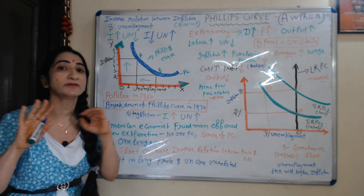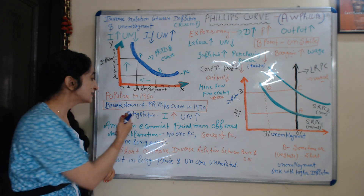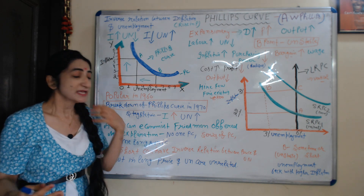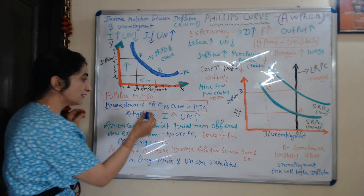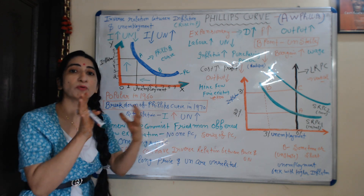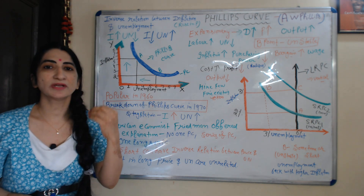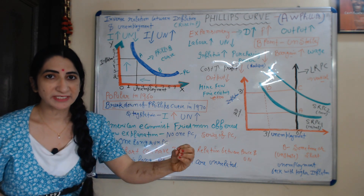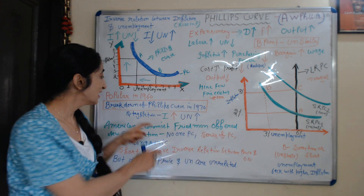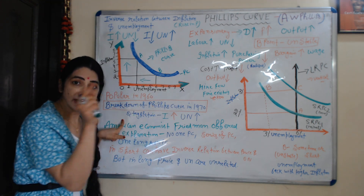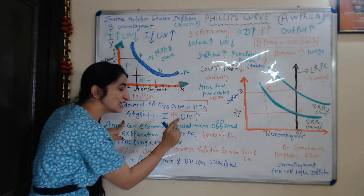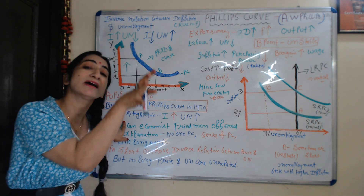This curve was not able to explain stagflation. What does stagflation mean? Stagflation means when in your economy both price and unemployment are rising — that is, when the rate of inflation and the rate of unemployment are both rising together. That is called stagflation.